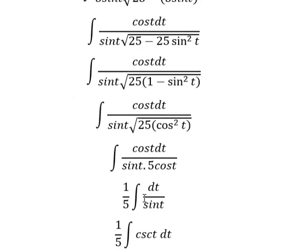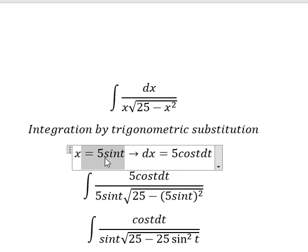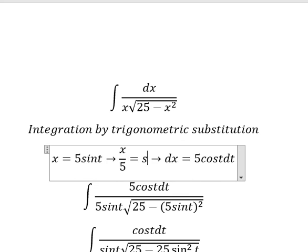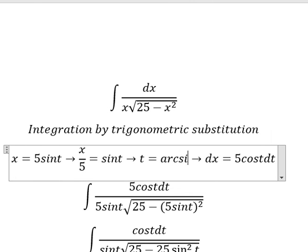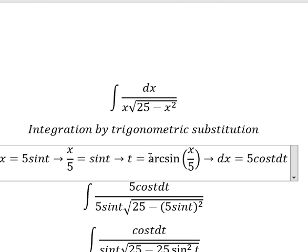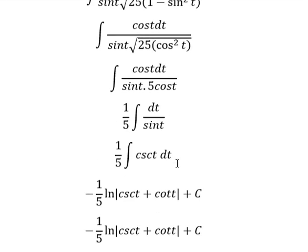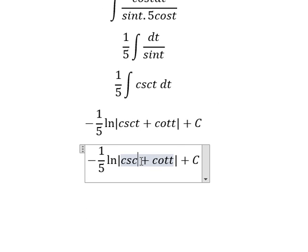We divide both sides by number 5. We look at t equal to arc sine of x over 5, so we put this one to replace, this one to replace for t.